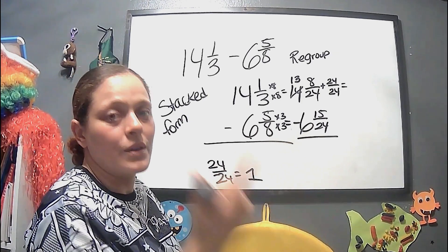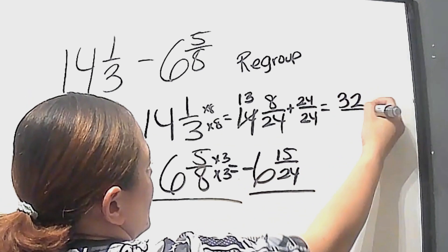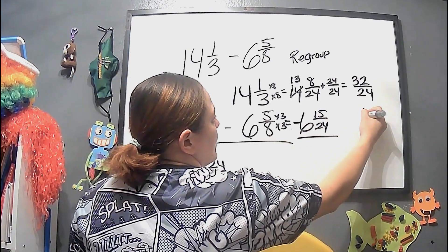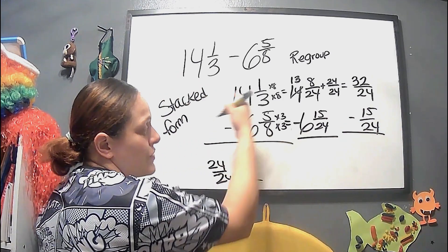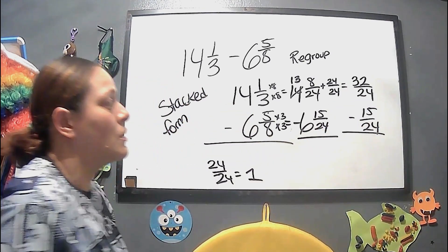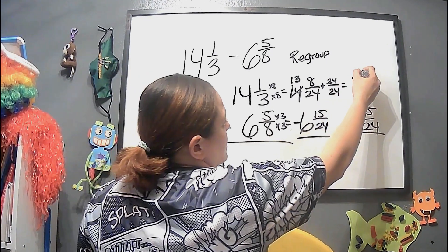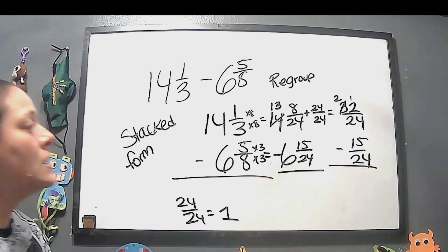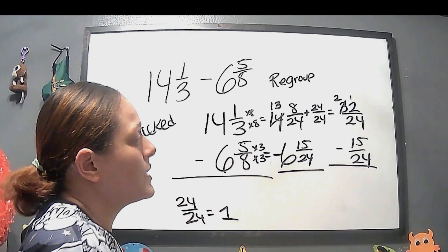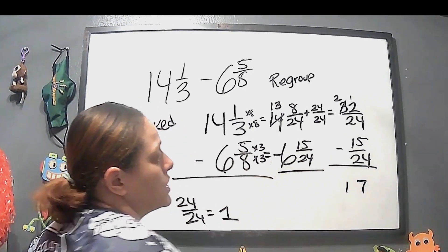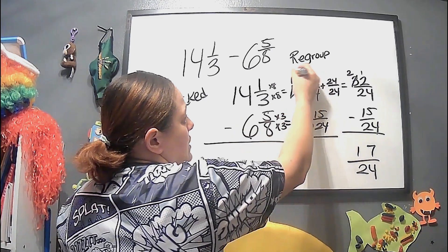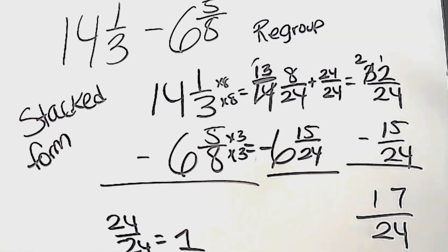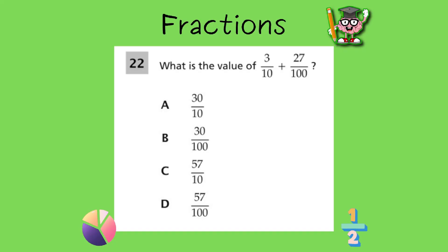Then we subtract 15 over 24. Don't forget the whole numbers: 32 minus 15 — we need to regroup again: 12 minus 5 is 7, then 13 minus 6 is 7, so we get 17 over 24 for the fraction part. And the whole number part works out to 7 and 17 over 24.